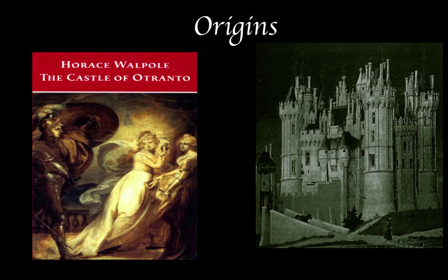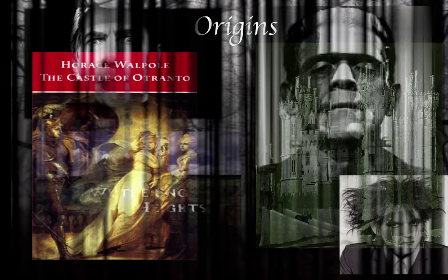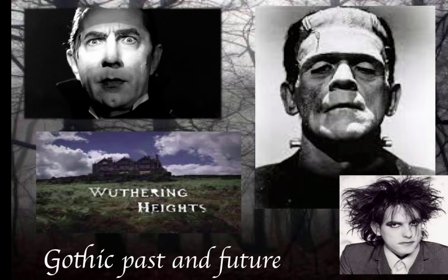The tale of doomed lovers plagued by ancient curses gave rise to a surge of interest in stories featuring unnatural beings, extravagant, violent, and intensely passionate protagonists, as well as other elements that have come to define the genre. In the rash of imitations that followed, enduring classics such as Mary Shelley's Frankenstein and Emily Brontë's Wuthering Heights emerged, with Bram Stoker's Dracula appearing almost a century after Walpole's trailblazing text.